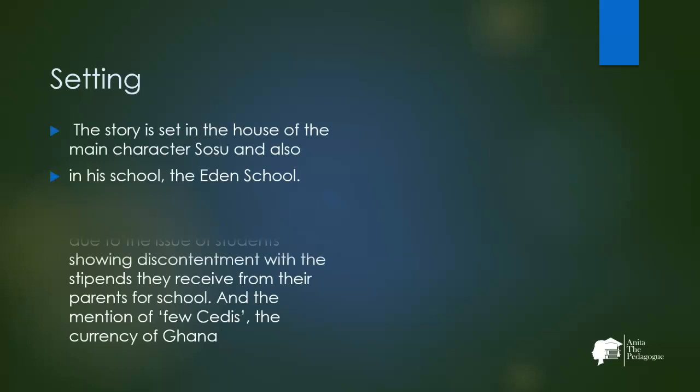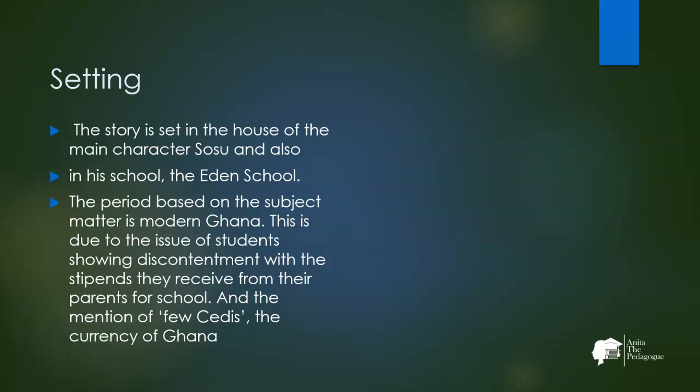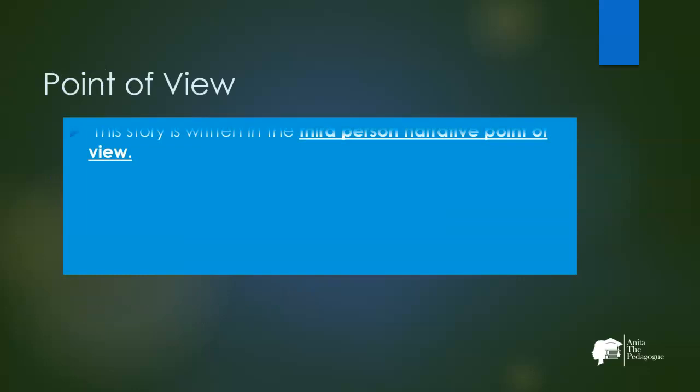The story is set in the house of the main character Sosu and also in his school, Eden School. The period is based on the subject matter, which is about the money given to children for school — the stipends. This relates to students showing discontentment with stipends received from parents. We are sure it has a Ghanaian setting because there is mention of cedis, which is the currency of Ghana.